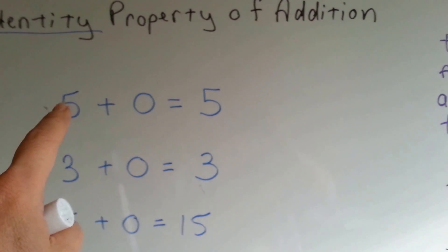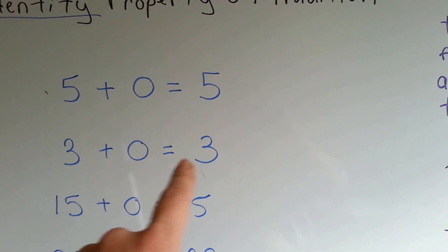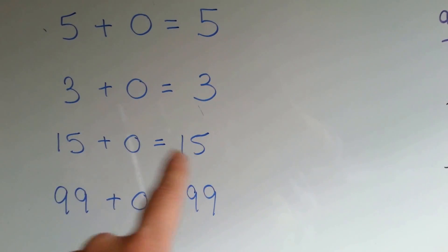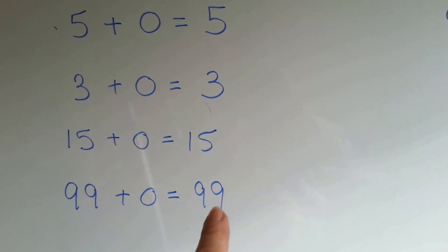Five keeps its identity and is still five. Three plus zero is still three. Fifteen plus zero is still fifteen. Ninety-nine plus zero is still ninety-nine.